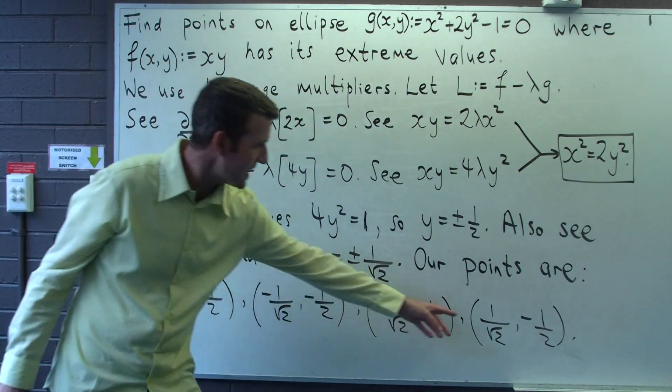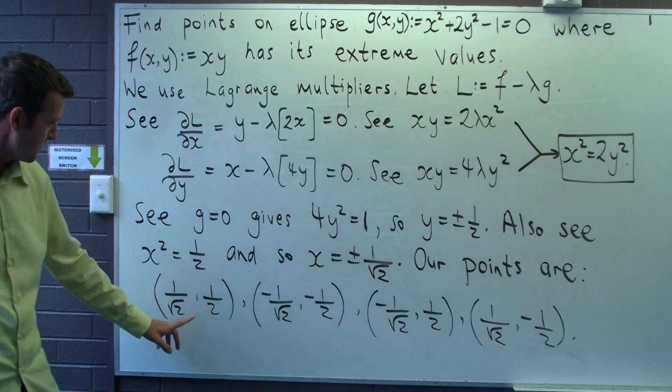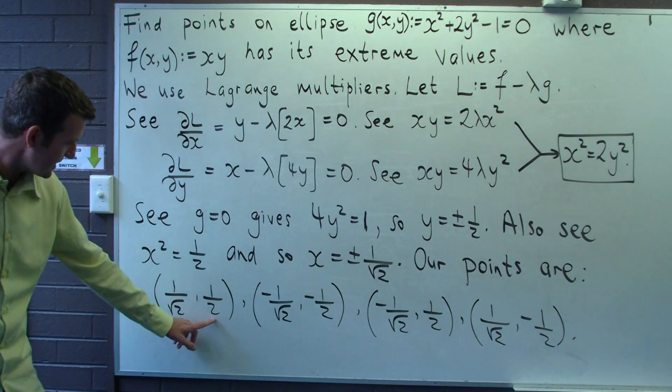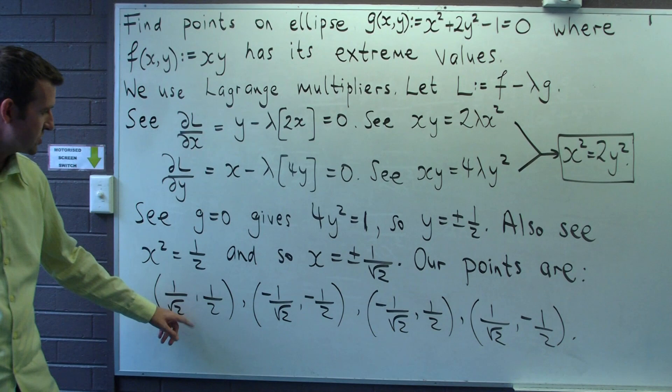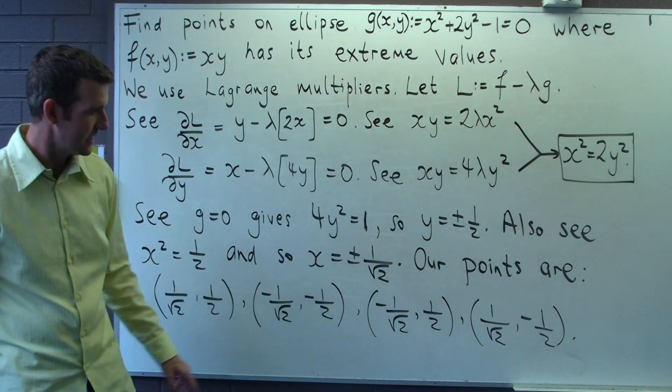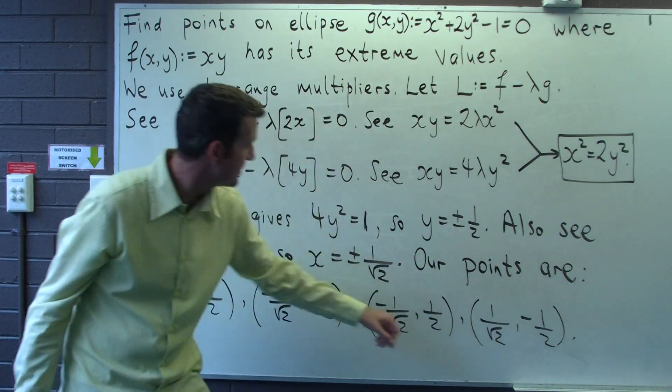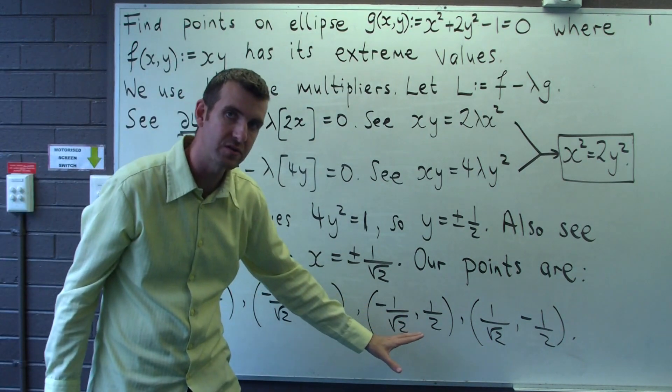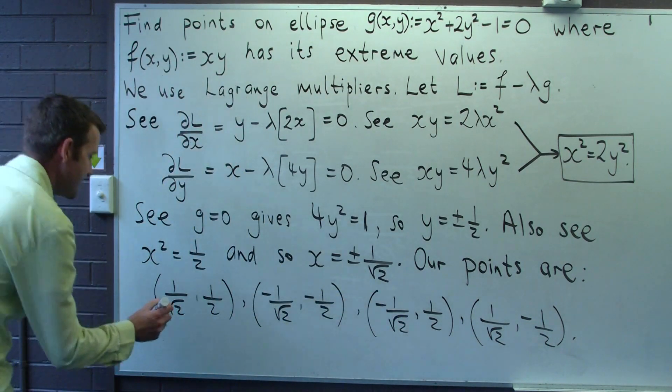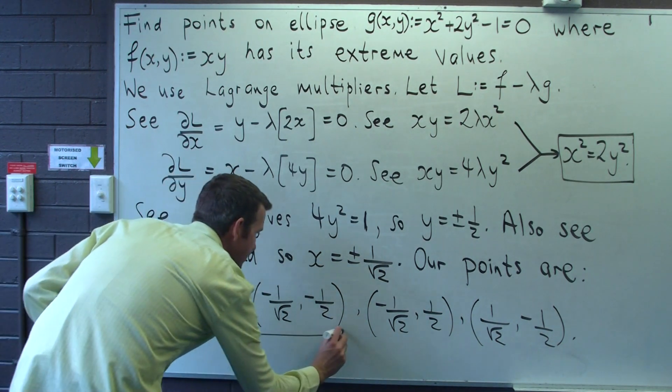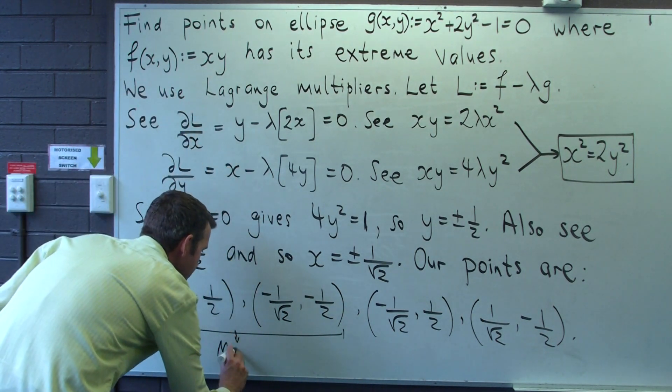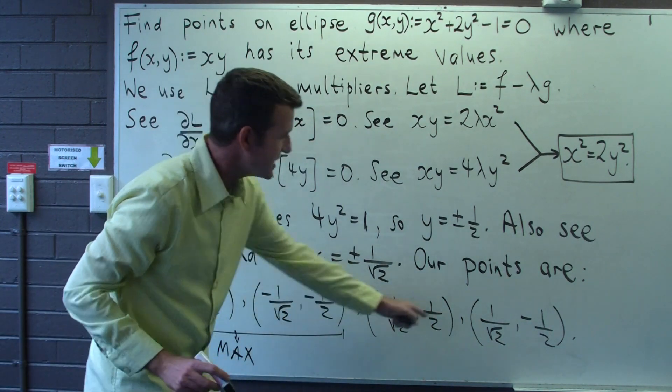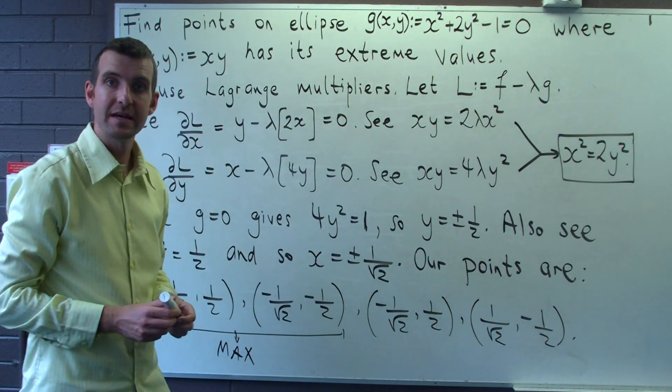Which points will give you maximums and which points will give you minimums? Well, if you put these values into xy, you're going to get one on two root two, and the same with this one. If you put these values into our function, you'll get minus one on two root two. So these two points lead to a maximum, whereas these two points lead to a minimum.